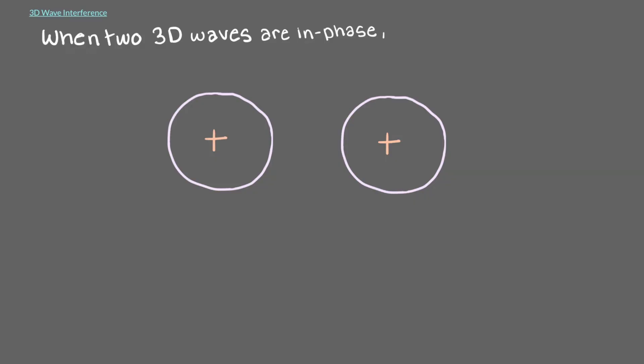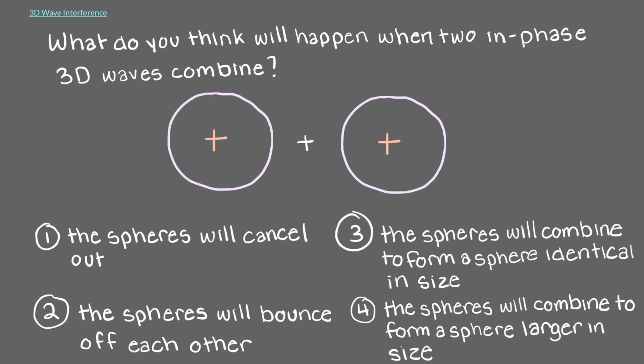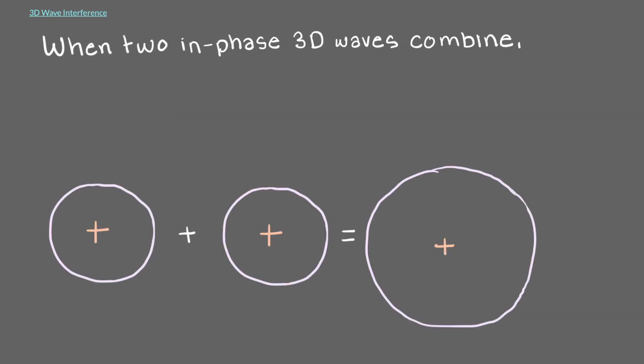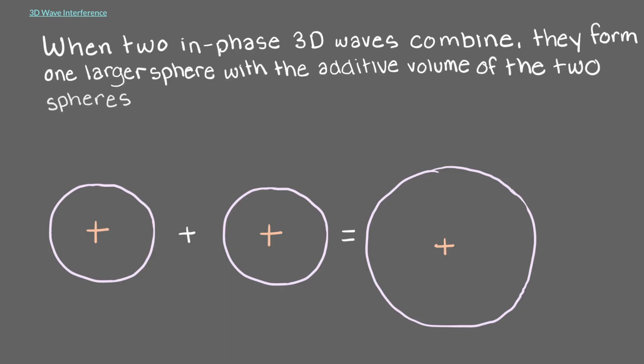When two 3D waves are in phase, they are drawn as identical spheres with the same shading. What do you think will happen when two in-phase 3D waves combine? When two in-phase 3D waves combine, they form one larger sphere that contains the additive volumes of the two spheres.